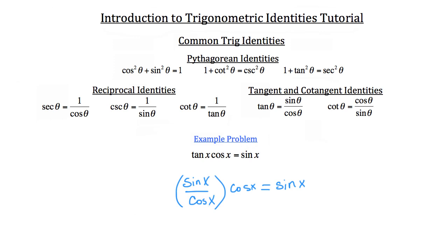The cosine of x is going to cross cancel, and what you'll have remaining on the left hand side is the sine of x. And the sine of x does equal itself — so the sine of x is equal to the sine of x. In math, this kind of problem with the equal sign is typically referred to as verifying an identity. In this case, we verified the tangent identity — that tangent of x is equal to the sine of x over the cosine of x.